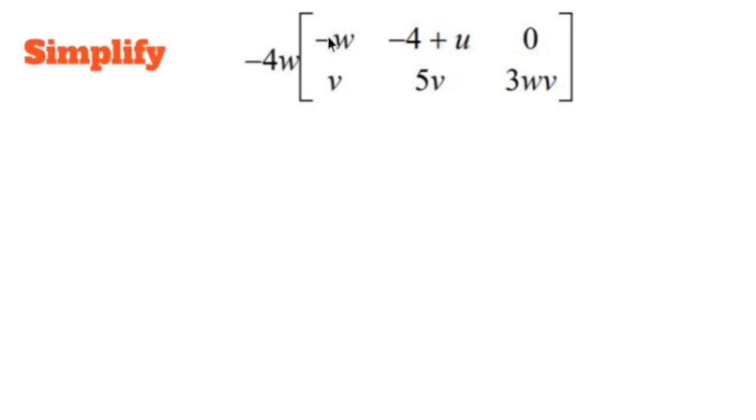Simplify negative 4w multiplied to this matrix right here. This is called scalar multiplication. Whenever you multiply a number or a variable, in this case both, to an entire matrix, scalar multiplication.